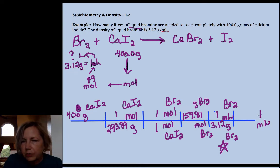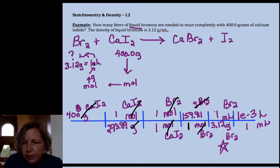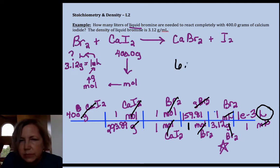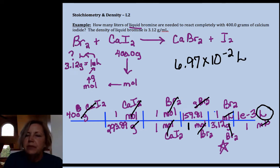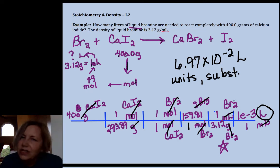Milliliters to liters, I would hope you would know how to do by now. And you want to always double check that your units cancel. Moles of calcium iodide, moles of bromine cancel, grams of bromine cancel, milliliters cancel, you are left with liters. And I got 6.97 times 10 to the minus two liters. Be really careful that you put units and the name of your substance. So you don't want to lose points over pettiness. All right, so now let's try one more example just to firm this up.